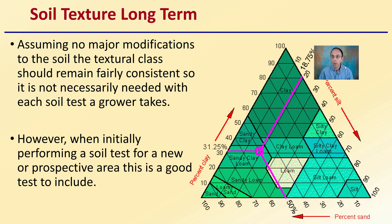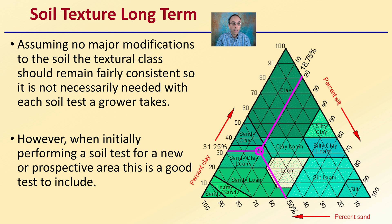Assuming no major modifications to the soil, the texture class should remain fairly consistent, so it's not necessary to check soil texture with each soil test. While you should regularly test for pH and nutrients, soil texture you can do once and it's probably not going to change to a great degree. However, when initially performing a soil test for a new or prospective area, it's a good idea to include this test. This is something you should know before purchasing or growing in a field, so you can make the best adjustments and know what you're walking into before the plants even go in the ground.